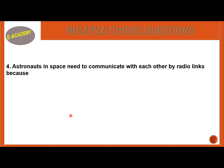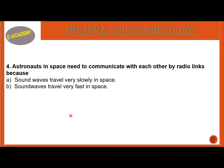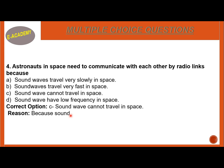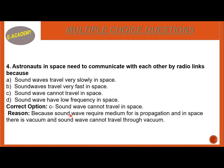Number 4: Astronauts in space need to communicate with each other by radio links because — sound waves travel very slowly in space, sound waves travel very fast in space, sound waves cannot travel in space, or sound waves have low frequency in space. The correct option is C — sound waves cannot travel in space, because sound waves require a medium for propagation, and space is a vacuum.